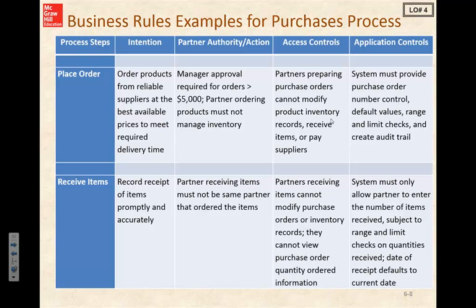Our access controls — those limits of who can use and change records in the system — specify that partners preparing purchase orders cannot modify product inventory records, receive items, or pay suppliers. Our application controls ensure data integrity: the system must provide a purchase order number control, default values, and range and limit checks, which will create our audit trail.